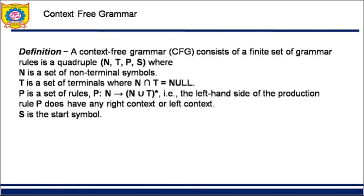A CFG consists of a finite set — we call it N, T, P, S, or sometimes V, T, P, S — where N (or V) is the set of non-terminals, meaning all capital letters. T is the set of terminals, meaning all non-capital letters and other symbols. There is nothing in common between them. P is the set of production rules, where the left-hand side implies the right-hand side.